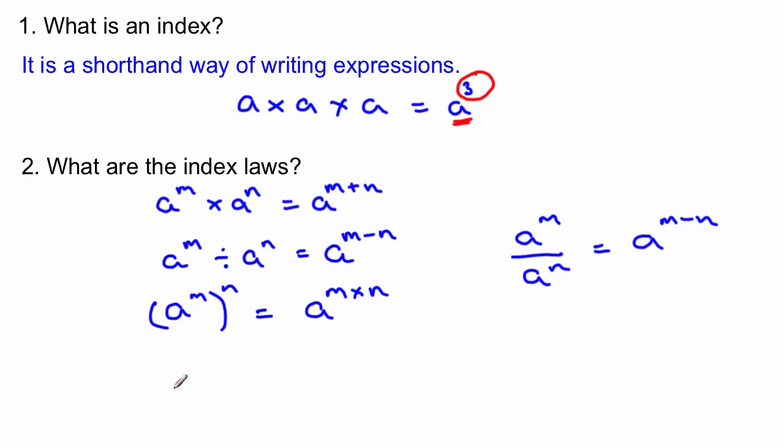And finally, one special one that we need to look at is when we have a base to an index of zero and the answer to that is always a one. So for example, if I had five to the zero, it would be one. If I had x to the zero, it would be one. In fact, if I had x, y in brackets and the whole bracket was equal to zero, the answer would be one.